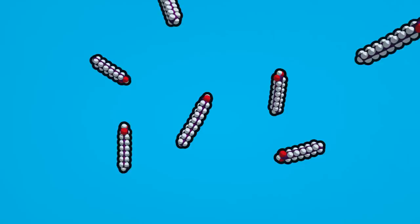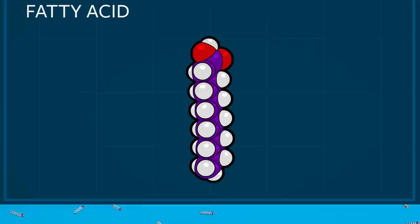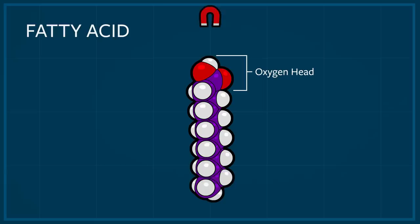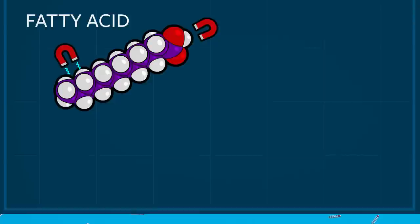When fatty acid concentrations are high enough, they bunch together, automatically self-assembling into a stable ball. This happens because water molecules are attracted to the oxygen heads of fatty acids, sort of like a magnet, but water repels their oily carbon tails. When fatty acids pass near each other, their tails are pushed together by water, eventually forming a ball.